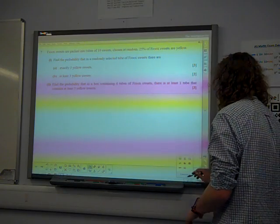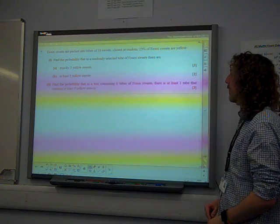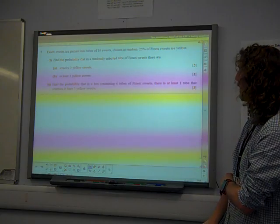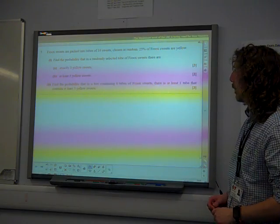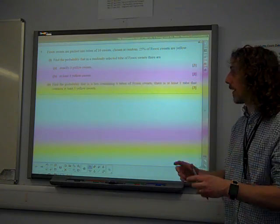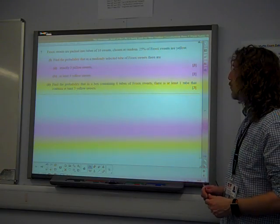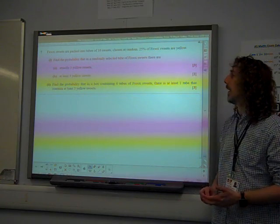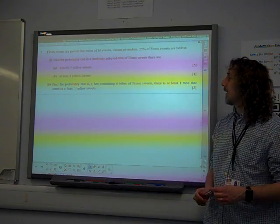Fruits sweets are packed into tubes of ten sweets. Chosen at random, 25% of fruit sweets are yellow. The ten sweets are chosen at random. Find the probability that in a randomly selected tube of fruits sweets, there are exactly three yellow sweets.